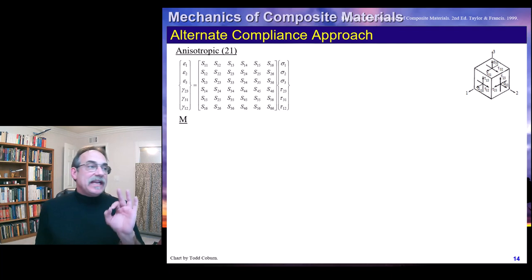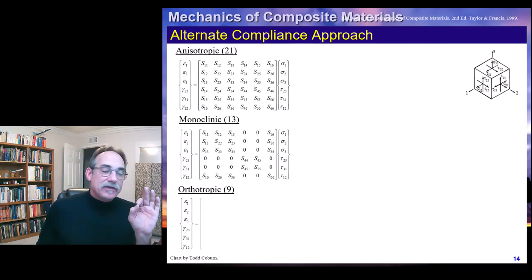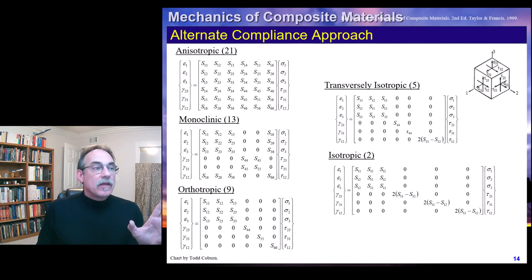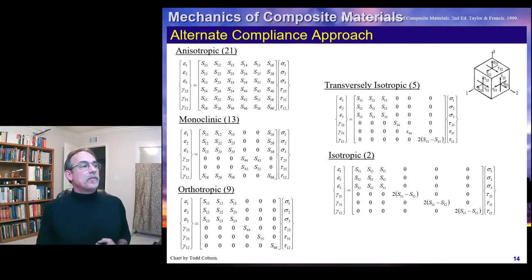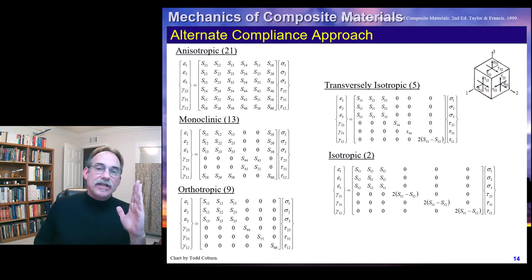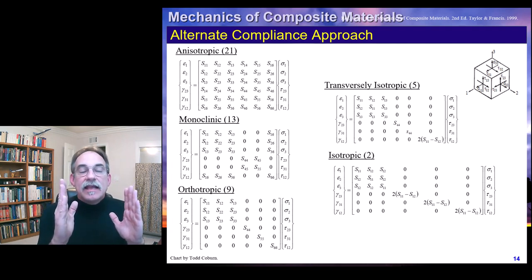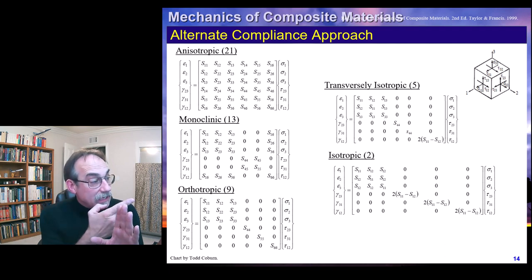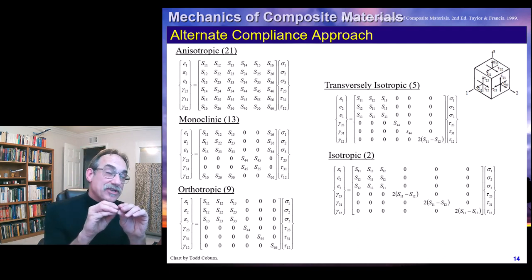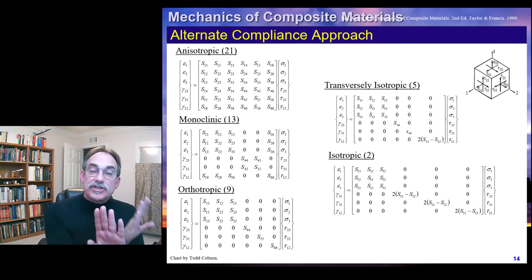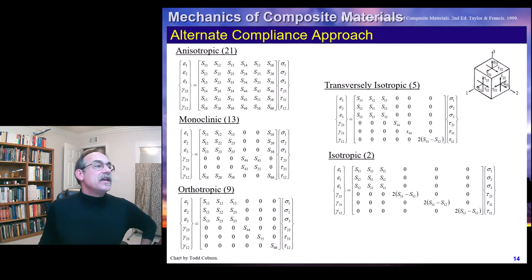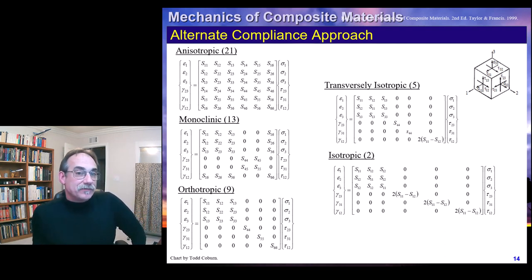We've seen how different material types yield different numbers of independent constants using a stiffness approach with the C values. We can also do it from a compliance approach: the C values are used when calculating stress by multiplying the C matrix times strains. If we want to calculate strains, we take the inverse of C, or use the compliance matrix with S values — strain equals the S matrix times stress, or stress equals the C matrix times strain.